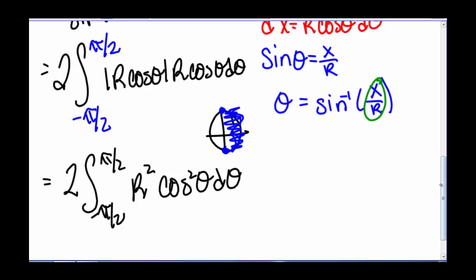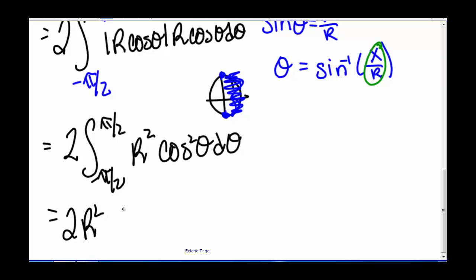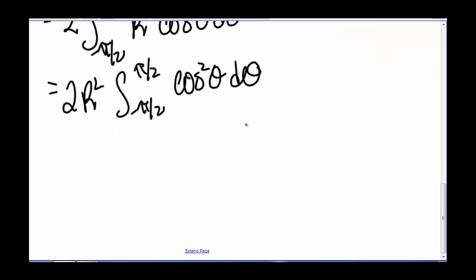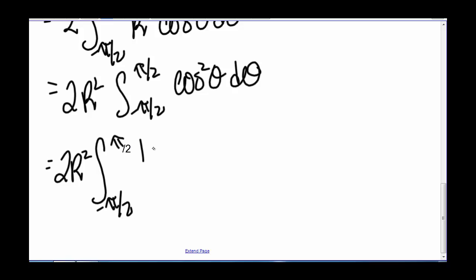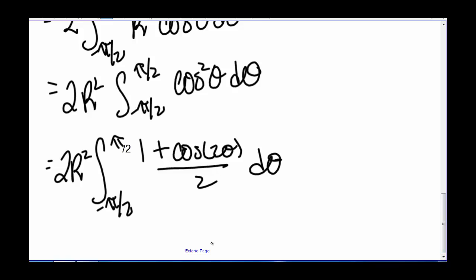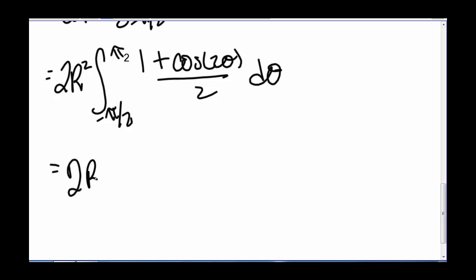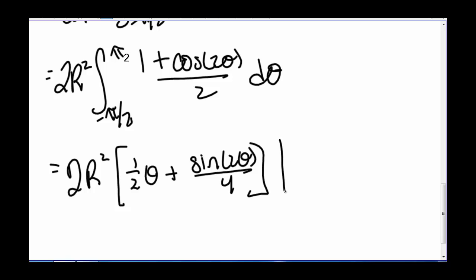We pull out the constant r squared, giving us 2r squared times the integral from negative pi over 2 to pi over 2 of cosine squared theta d theta. We rewrite this using the half-angle theorem: 2r squared times the integral from negative pi over 2 to pi over 2 of 1 plus cosine of 2 theta, divided by 2.